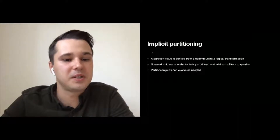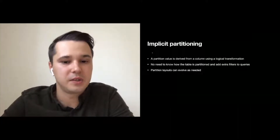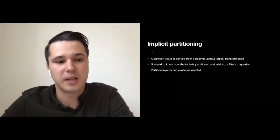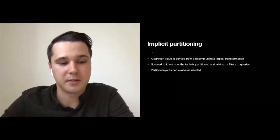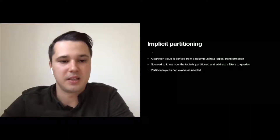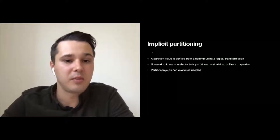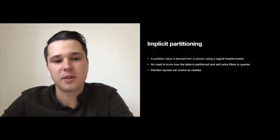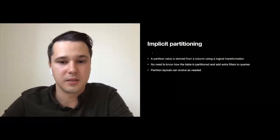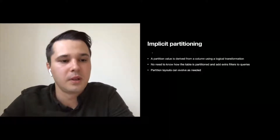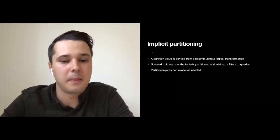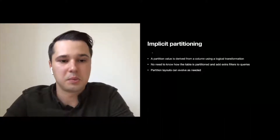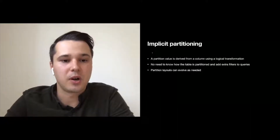Iceberg also supports implicit partitioning. Today, data engineers have to produce physical partition values, and users must be aware of the underlying table partitioning. They must specify predicates on those partition values to get meaningful performance. In Iceberg, your partition value can be stored and represented as a logical transformation on top of your column. Whenever you have a predicate on that column, Iceberg will derive the partition value for you and use it to prune partitions. This includes the ability to evolve partition layouts as needed in the future. Iceberg also solves schema evolution by assigning a unique column ID for every column. You can safely add, drop, update, and reorder columns without side effects.